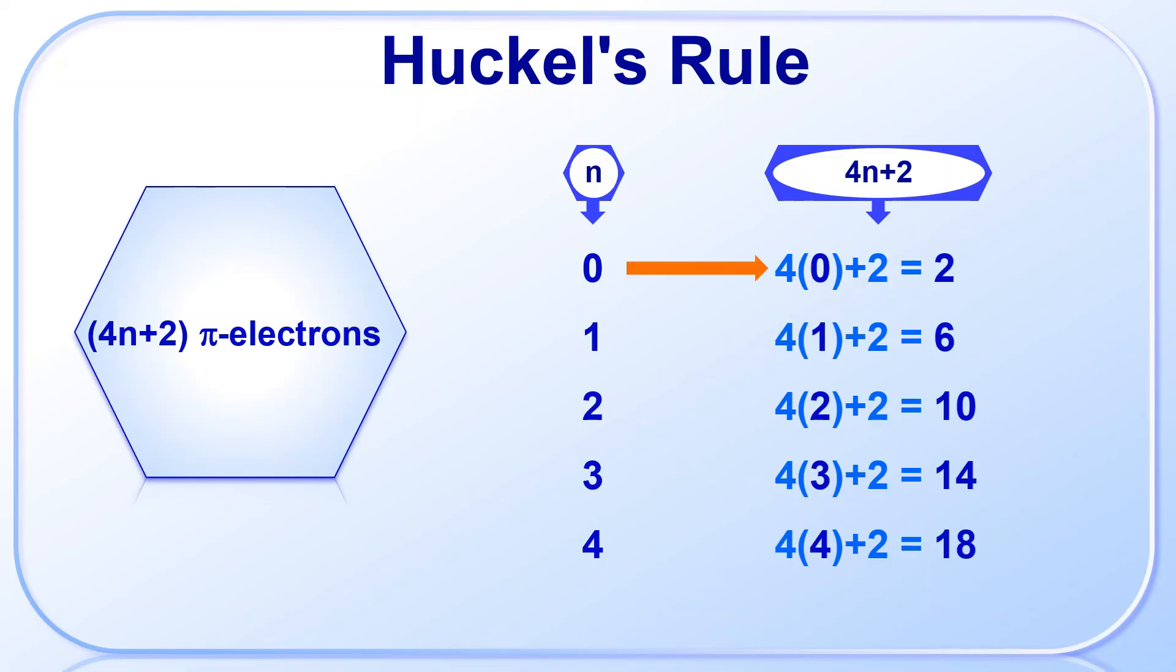When n equals 0, 4n+2 equals 2, it is a Hückel number. When n equals 1, 4n+2 equals 6, another Hückel number. When n equals 2, 4n+2 equals 10, another Hückel number. So the series of Hückel numbers is 2, 6, 10, 14, 18, and so on. These numbers are very important for deciding whether a compound is aromatic or not.